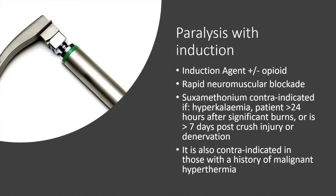Suxamethonium is also contraindicated in those with a history of malignant hyperthermia. Rocuronium is an alternative; it takes slightly longer than suxamethonium to provide optimal neuromuscular blockade, but has the added advantage of having a reversal agent. Sugammadex makes it possible to swiftly and completely reverse neuromuscular blockade in the event of difficulty.